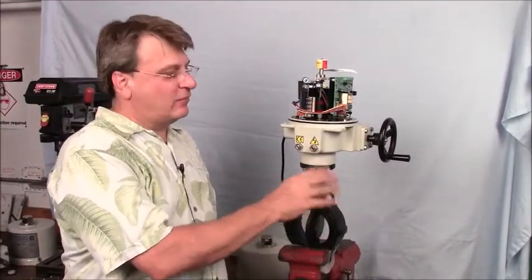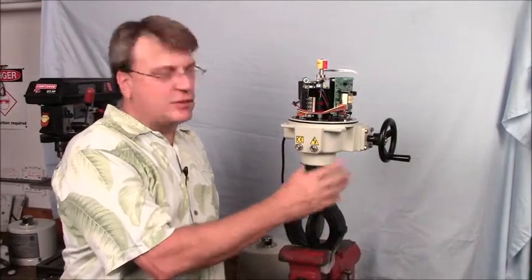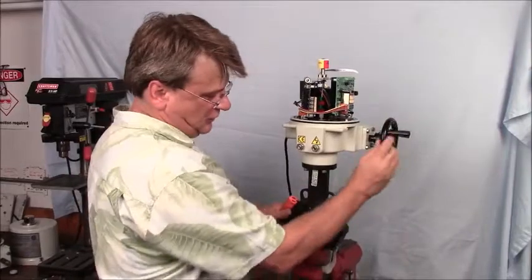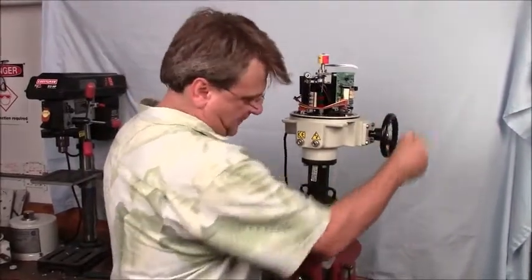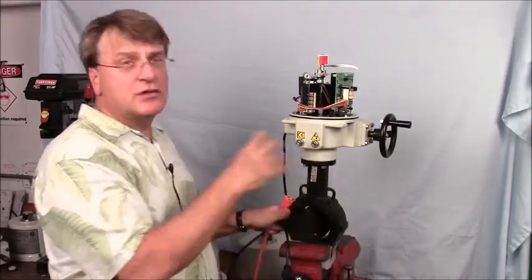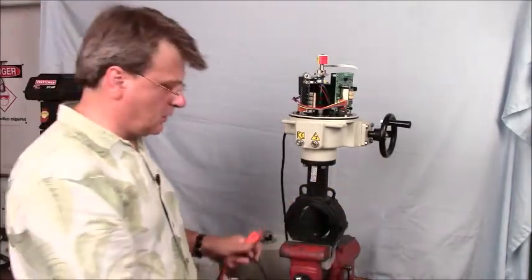We've set up the actuator for the valve to travel both closed and open. First thing we want to do is come to some intermediate position for the actuator and the valve position. So we just made it some midpoint between open and closed.